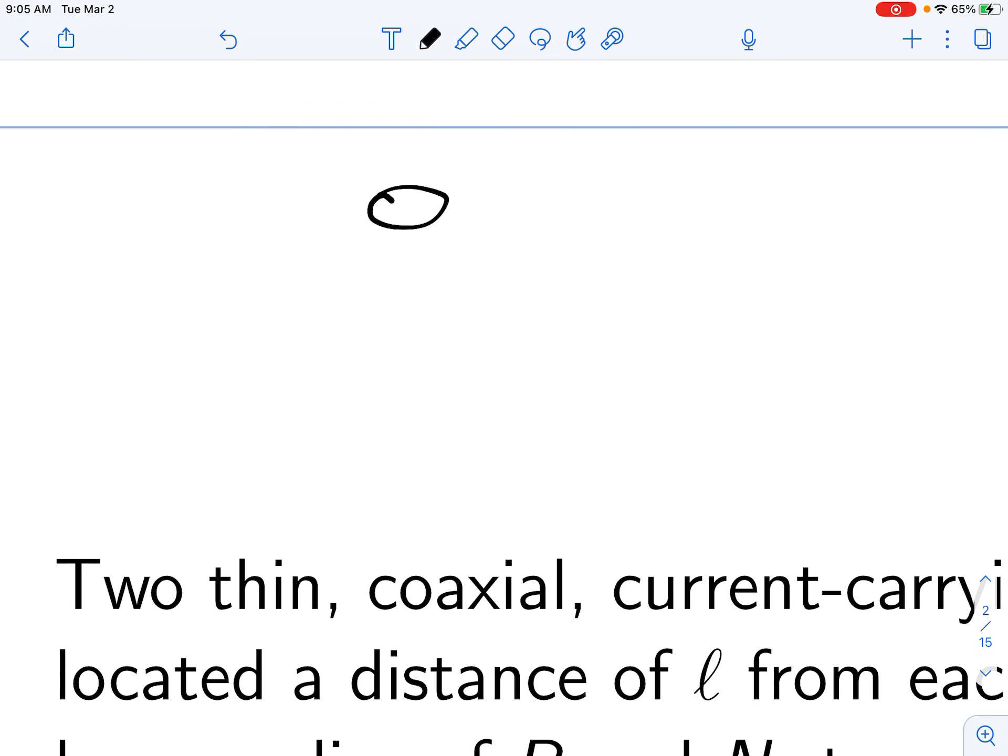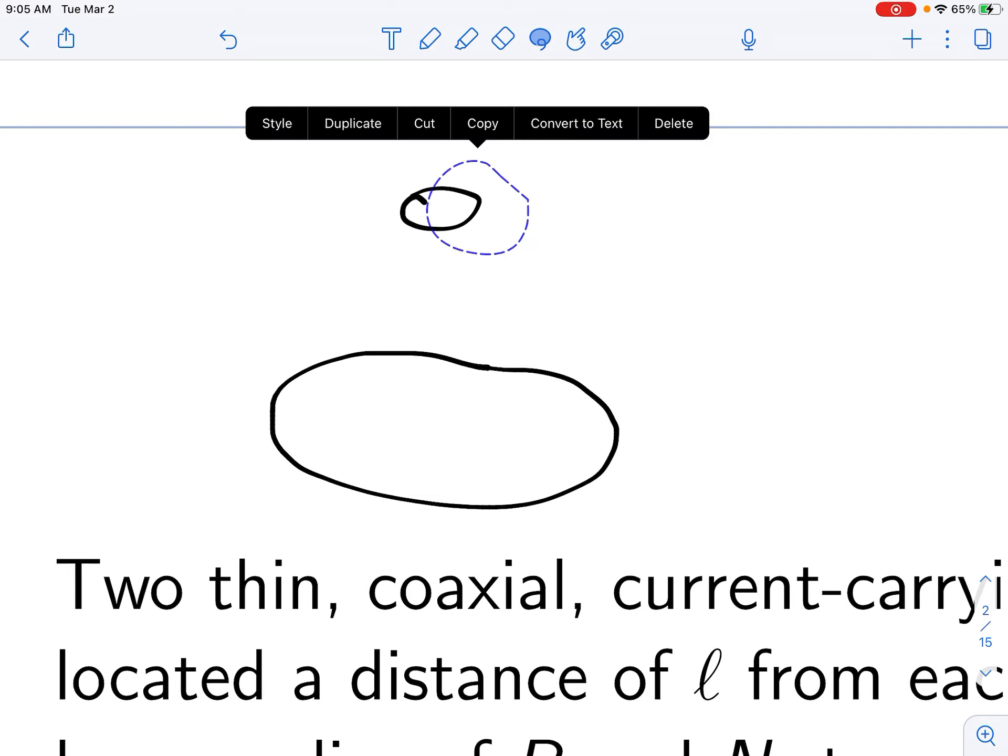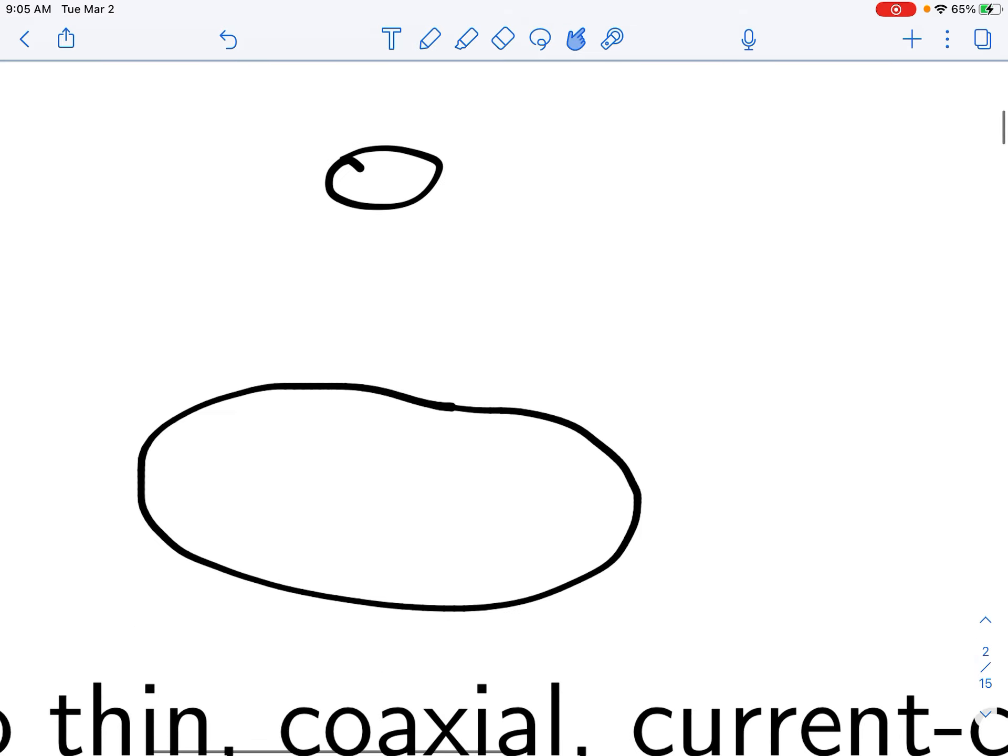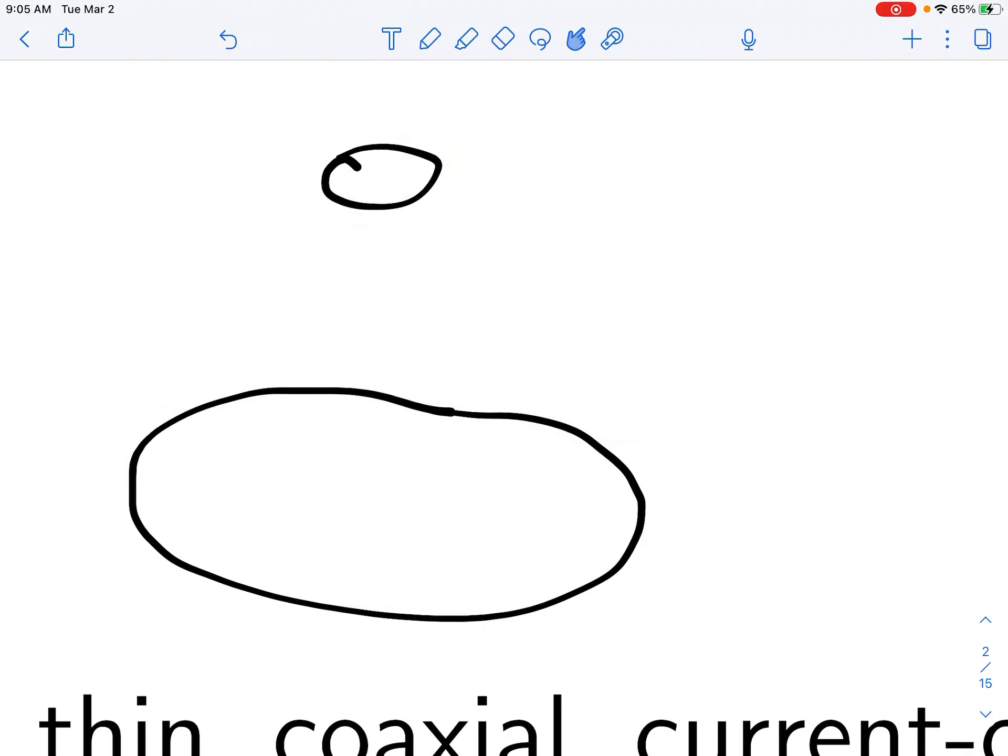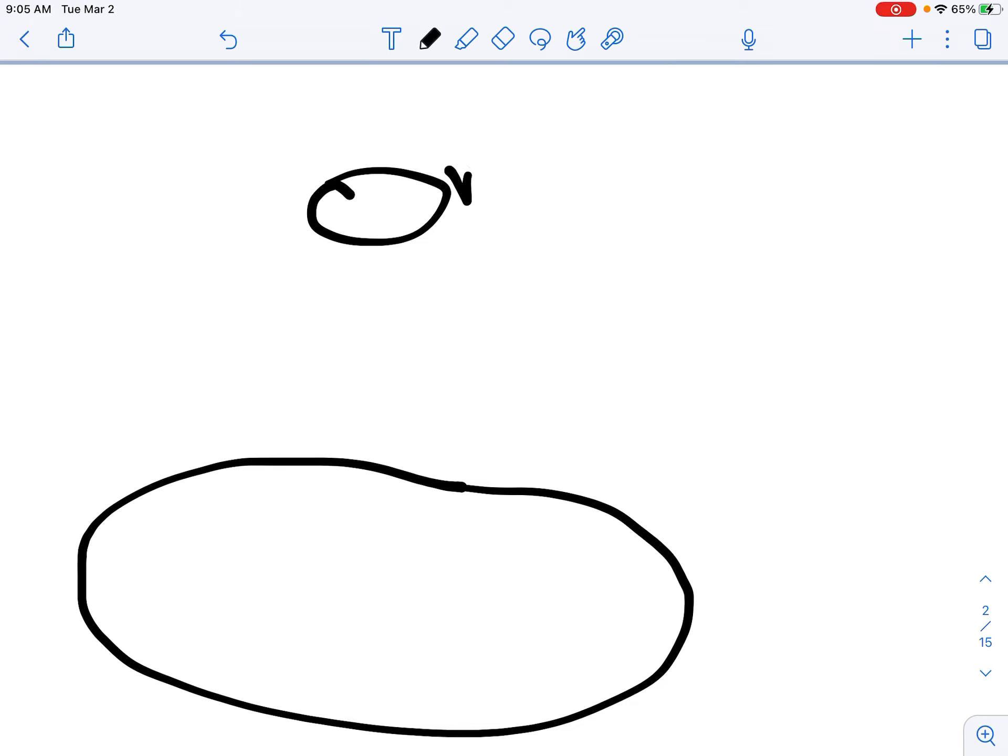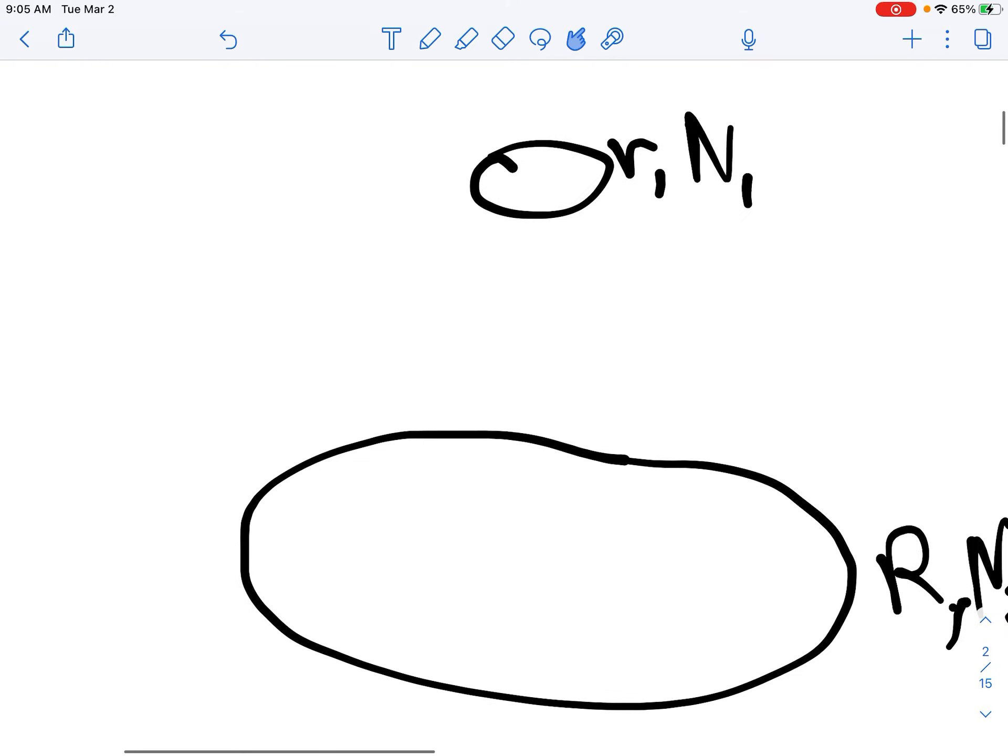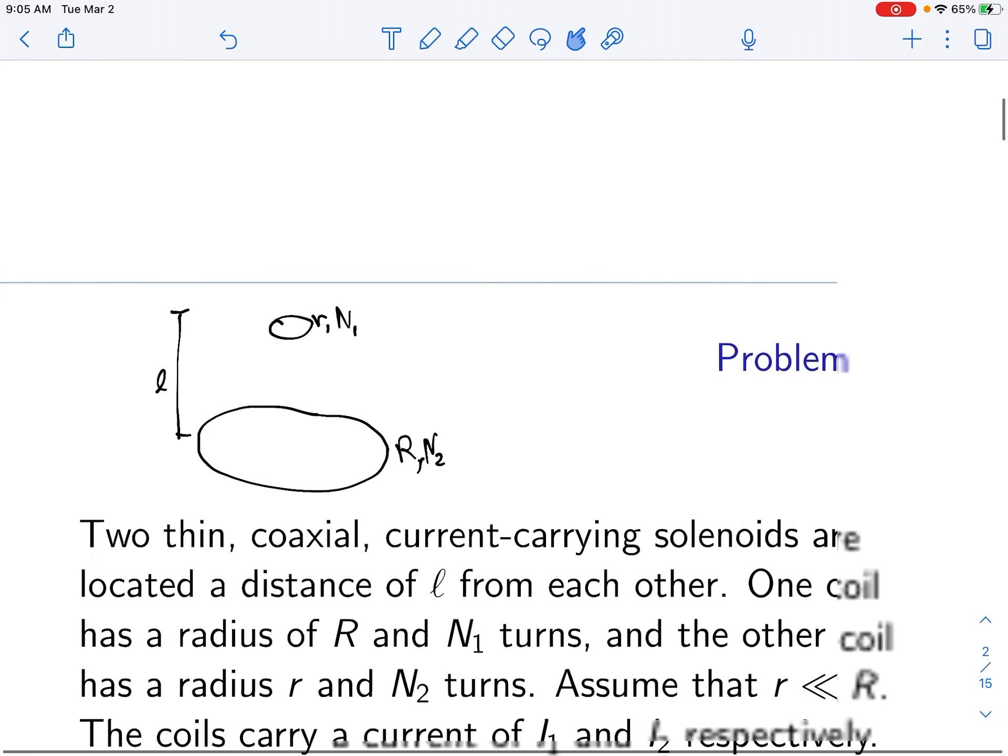So let's draw a picture of this. There's going to be one coil that's like this and another coil that's like this. They're not going to be very thick or have a very big length. They're going to be approximately circular regions because they're thin, as specified in the problem, and they're coaxial. They have this common axis and they carry some current.